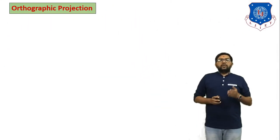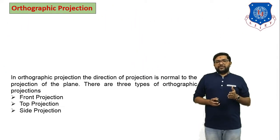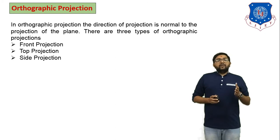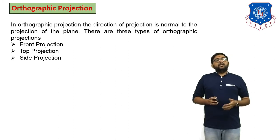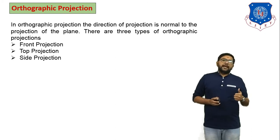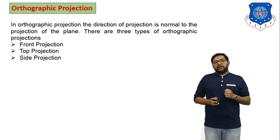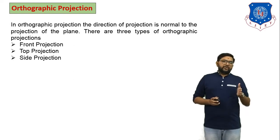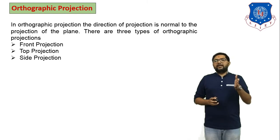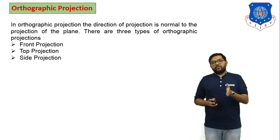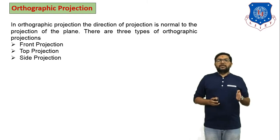What is orthographic projection? In orthographic projection the direction of projection is normal to the projection plane, and there are three types of orthographic projection: front projection, top projection, and side projection.